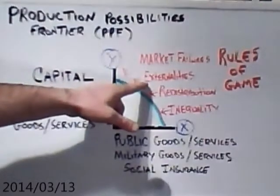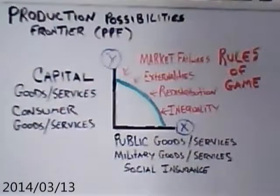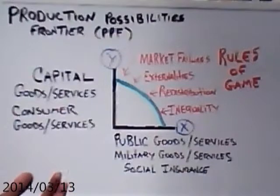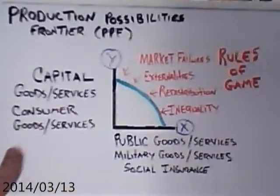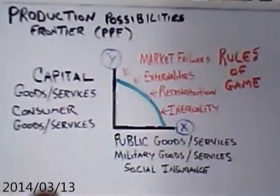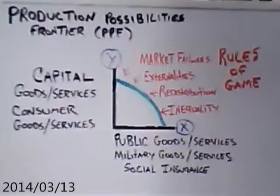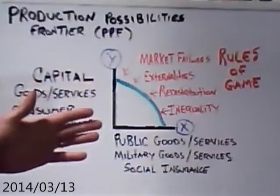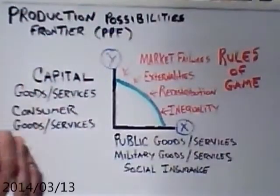Let's move on to externalities. An externality occurs when a third party bears the cost of the production or consumption of a good or service. The best example is pollution. If you're producing a product and there's a toxic byproduct, you can dispose of it properly through legal channels, or — as many have done in the past — dump it in the river or down the road. The third party then pays an environmental cost, potentially a health cost, and property values can decline. Externalities are a major source of statutes and administrative regulations.